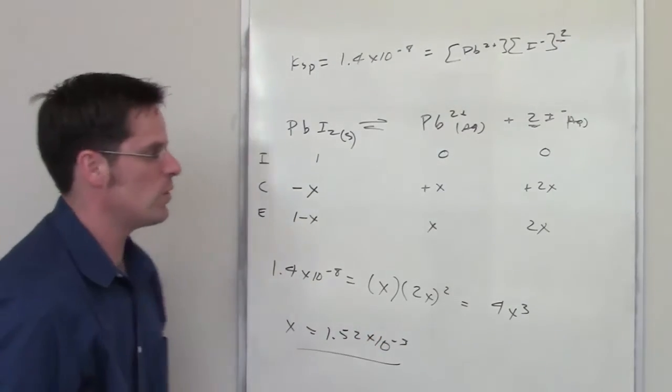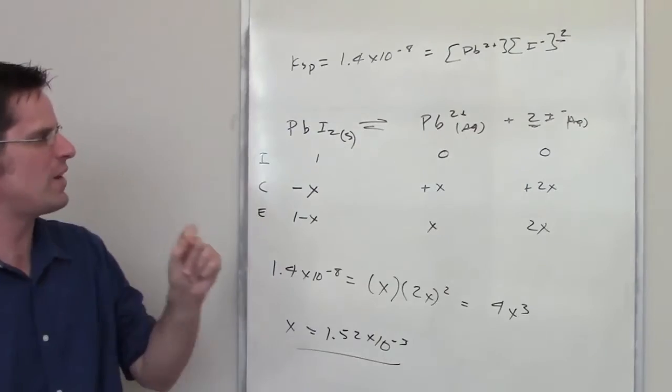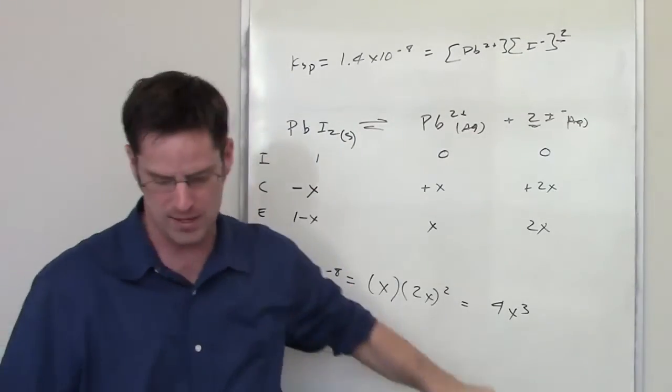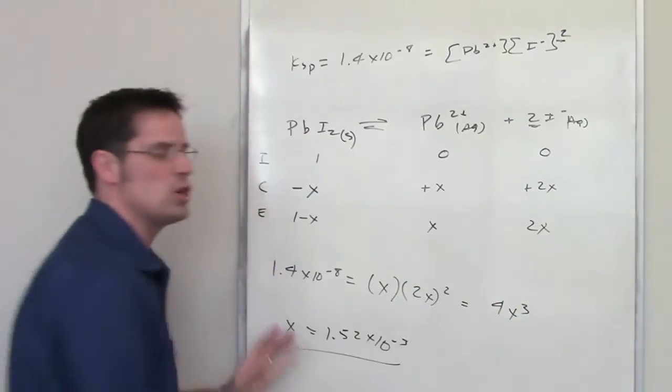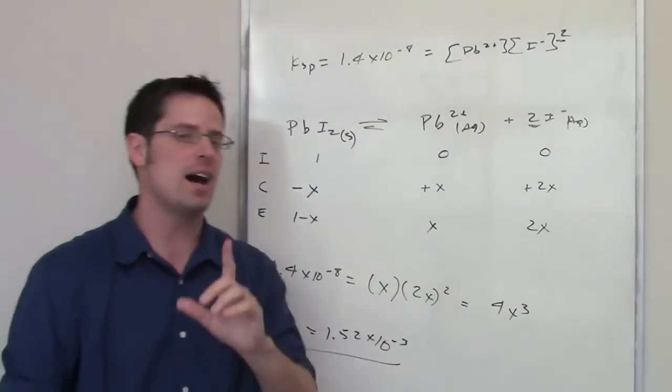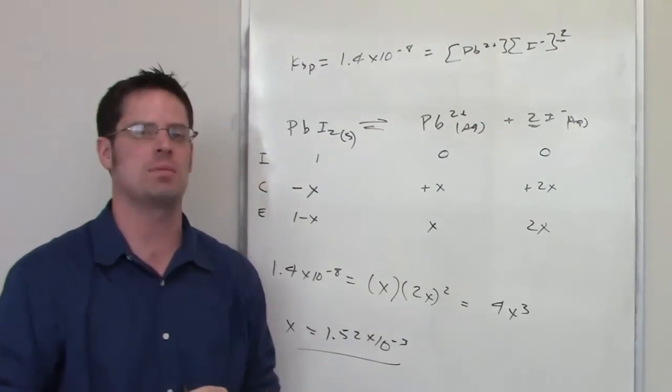Now, this is not the answer to the question, because the question is asking what's the final equilibrium concentration of iodide minus. So, what you do is you take this value x and put it in here, multiply it by 2, and that will give us the final iodide concentration in this equilibrium setting.